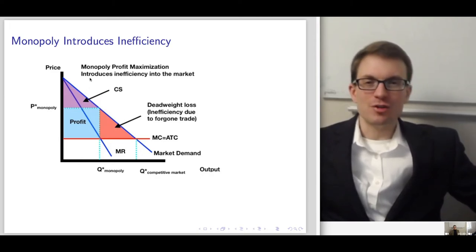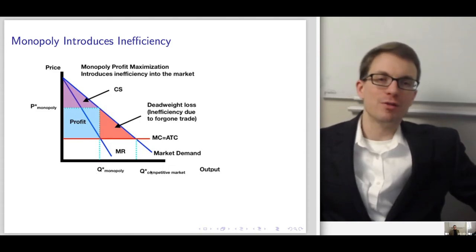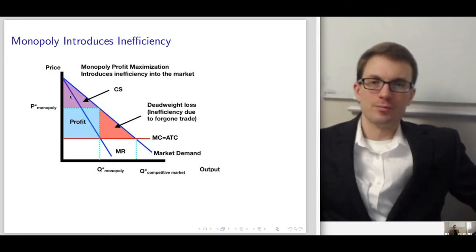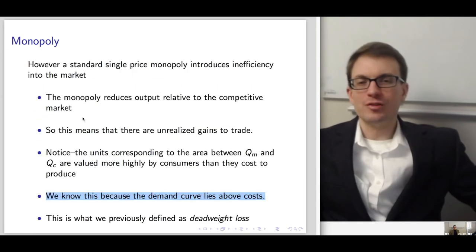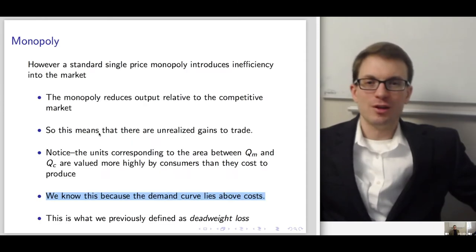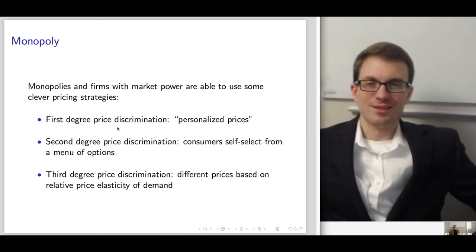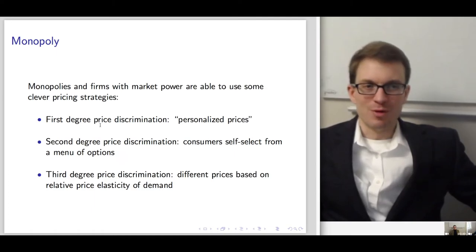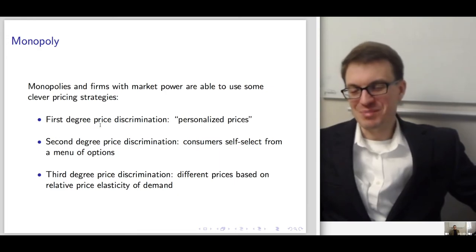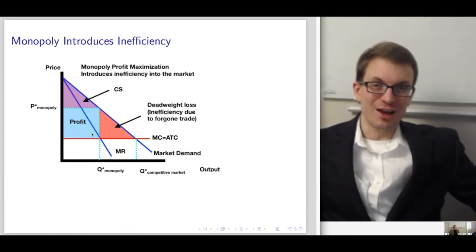Monopoly profit maximization introduces inefficiency — in particular, deadweight loss shown in red. This is the inefficiency due to foregone trades that don't happen under a monopoly but would have happened if the market were competitive. Consumer surplus is smaller, and relative to perfect competition where there's no producer surplus, the monopoly cuts into this surplus to get some profits, but at the cost of introducing deadweight loss.